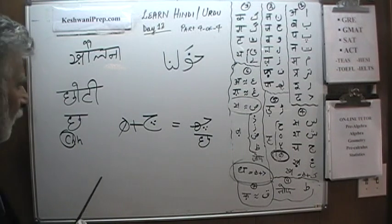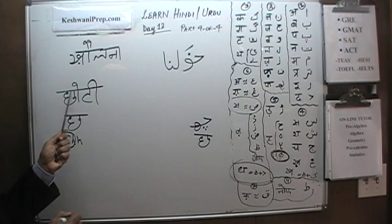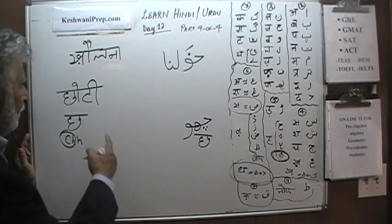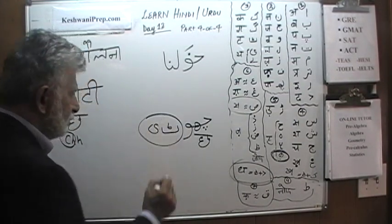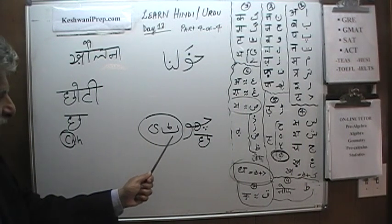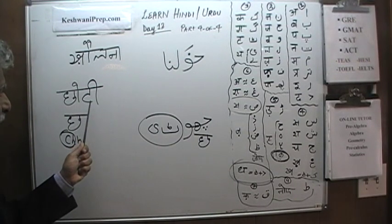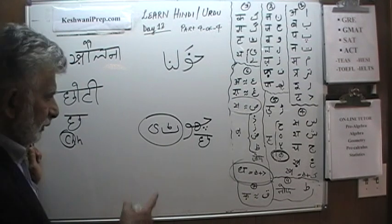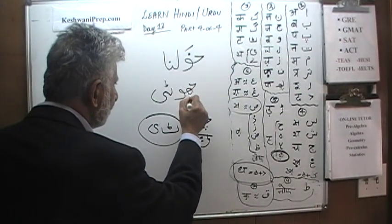To that Chh we are going to add Vav for the O sound, then add Ta, and then Chhoti Ye. Chhoti Ye, as we learned in the Iki Matra, indicates Badi Iki Matra. So here we have two matras: Choti Oki Matra and Badi Iki Matra — Badi Iki Matra because it takes Chhoti Ye. When we put them together it gives us: Chhoti.